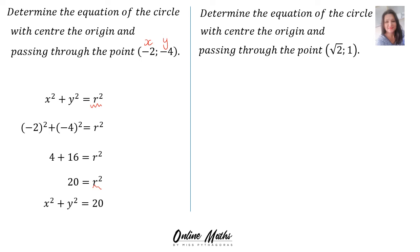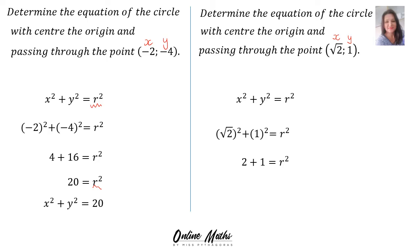The next example: Determine the equation of the circle with center at the origin and passing through the point (√2, 1). Into the formula x² + y² = r², we substitute x = √2 and y = 1: (√2)² + 1² = r², which gives 2 + 1 = 3 = r². Don't take the square root — we leave r². Therefore, the equation is x² + y² = 3.